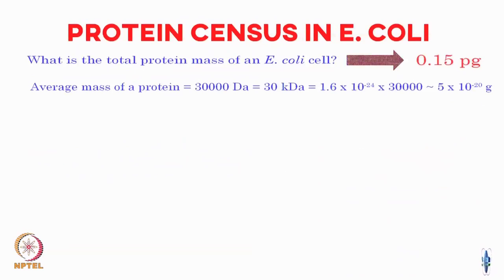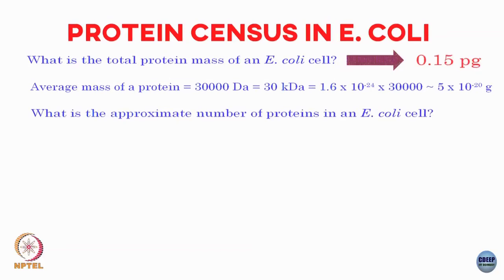Armed with this information: an E. coli cell has a total protein mass of 0.15 picograms, an average protein is 300 amino acids long, and each amino acid is 100 Daltons — which means the average mass of a protein is around 30 kilo Daltons, or about 5 × 10⁻²⁰ grams. Now I can estimate the approximate number of proteins inside an E. coli cell.